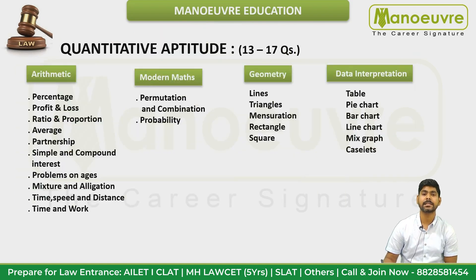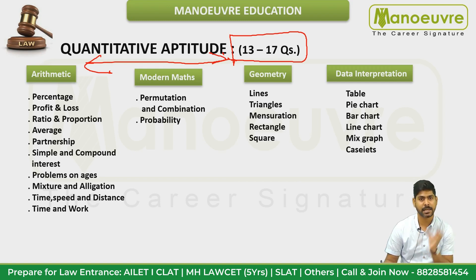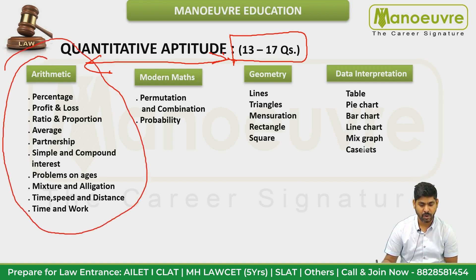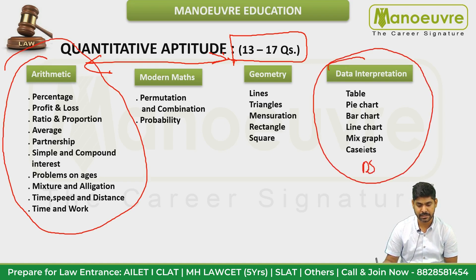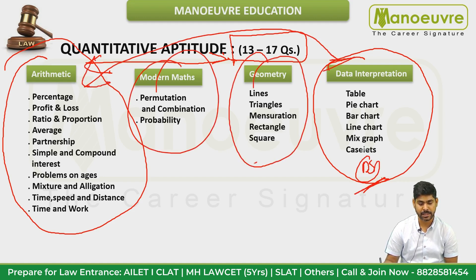Next is mathematics, with 13 to 17 questions. If maths is your weak area, don't be tense — the questions are easy level arithmetic, followed by data interpretation and data sufficiency. Modern maths and geometry questions are also covered.